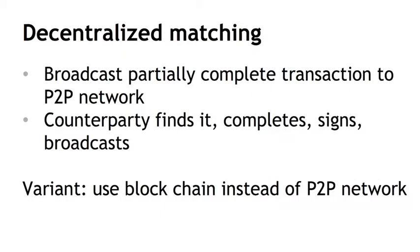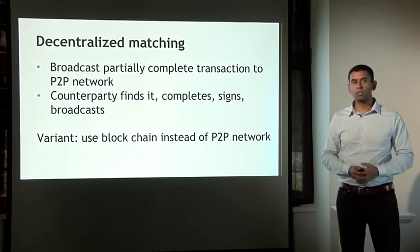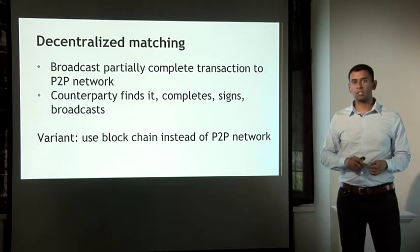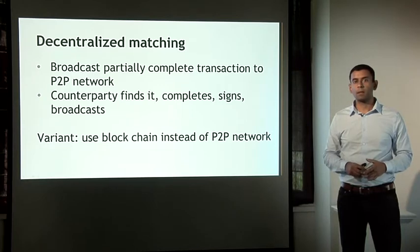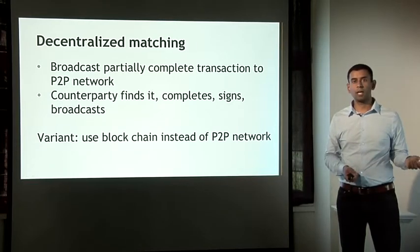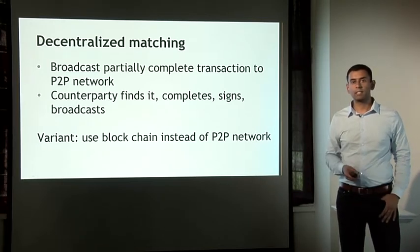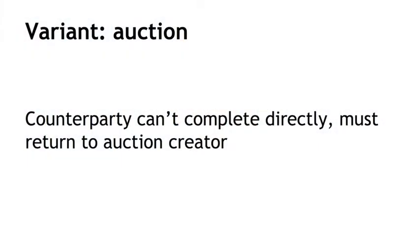A variant is that instead of partial transactions being broadcast on the P2P network, you can have partial transactions that are complete in terms of the underlying Bitcoin encoding. So offers for a car can be actual complete Bitcoin transactions on the blockchain, noticed by potential buyers who then continue to the next stage. A further variant is the auction, where the buyer cannot simply complete and finalize the transaction — instead, they sign it and return it to the seller, who must also sign it. This allows the seller to acquire different bids and pick the best one.